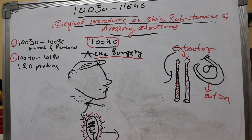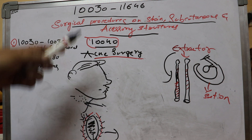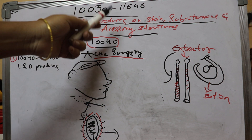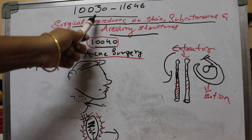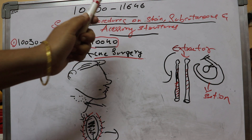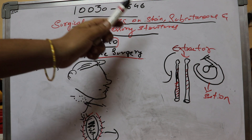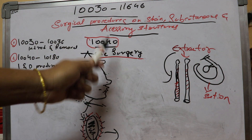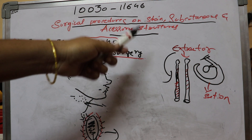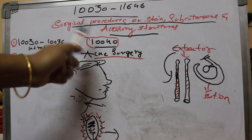Hi everyone. In this video I am going to explain about the surgical procedures of the integumentary system. The code series starts from 10030 to 11646, and it completely includes the procedures which are done on the skin, subcutaneous, and the accessory structures — that is, the surrounding structures of the skin and the subcutaneous layers.